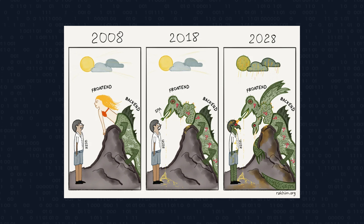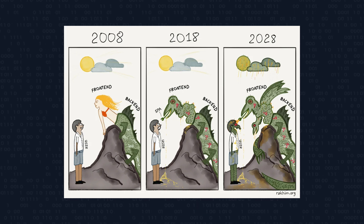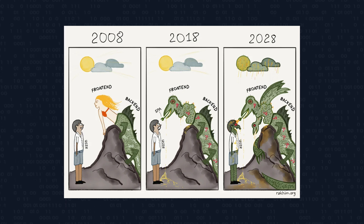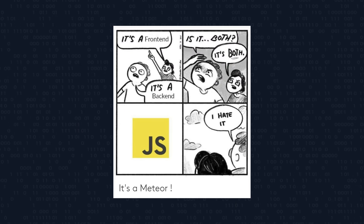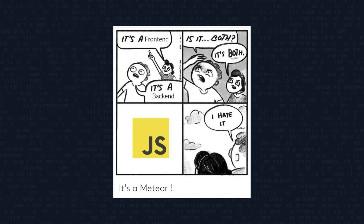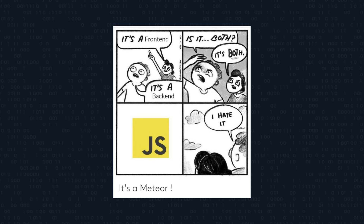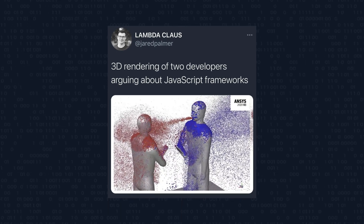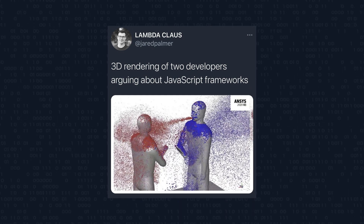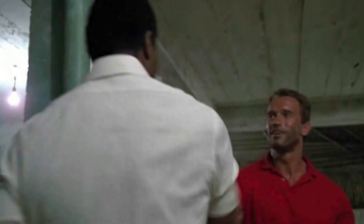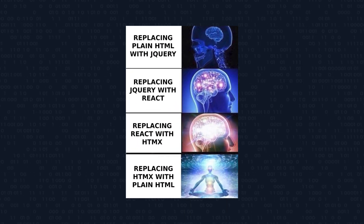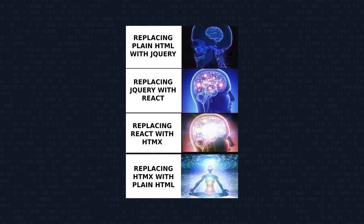To avoid the clunkiness of multi-page applications, many developers in the past decade have relied on front-end frameworks and libraries to deliver more fluid user experiences. However, single-page applications have disadvantages like shipping a lot of JavaScript to the client, learning a complex ecosystem, and arguing with other developers about why your framework of choice is far superior. HTMX takes an approach somewhere in the middle, offering the interactivity of single-page applications while maintaining the server-side simplicity of multi-page applications.